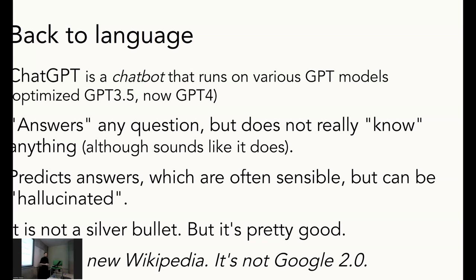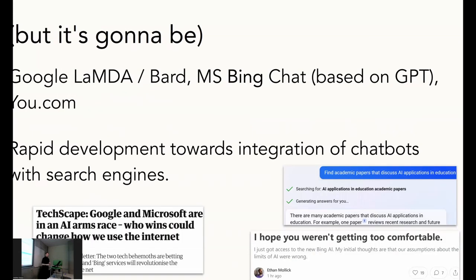It's not quite a search engine right now, but it's going to be. These things are advancing extremely quickly. Google is obviously coming up with their product. There is Microsoft Bing — the search engine that nobody used so far, but now it's going to be used because it's basically ChatGPT but with internet access. So any hallucination problems that ChatGPT had — that's much better in Bing. It's currently in closed beta, but I've been trying it out, so I have some examples. There are also other startups — u.com, Claude by Anthropic — these keep coming like mushrooms after rain. There's rapid development towards integration of chatbots and search engines, and that's happening right now.